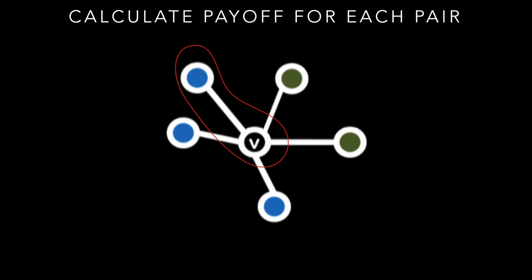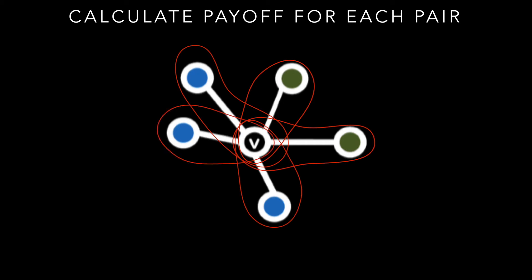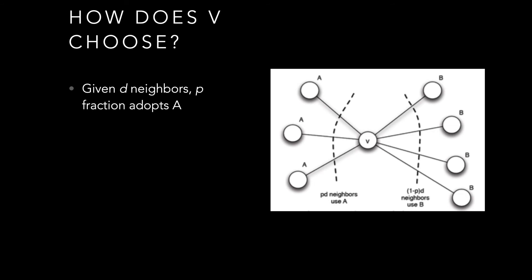Looking at the graph and pairs of nodes for vertex V, I can see what payoff I get from each neighbor. The question becomes: how do I choose what option to take, knowing I can choose option A or B and can see what my neighbors are doing? If I have some set of neighbors D and some fraction P have chosen option A, then if I choose option A, my payoff is A times P times D. Conversely, the payoff for choosing B is B times D times (1 minus P) — the fraction of neighbors who didn't choose option A. I take the maximum of these.